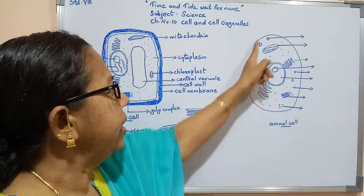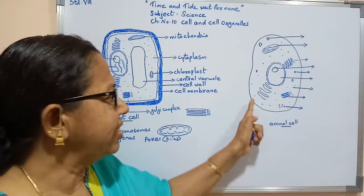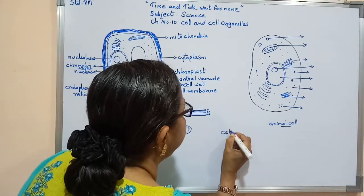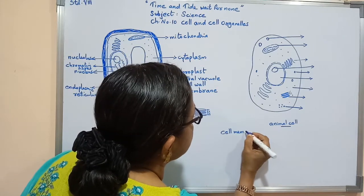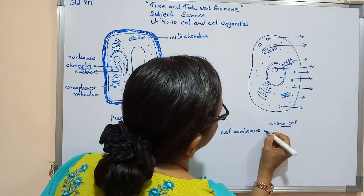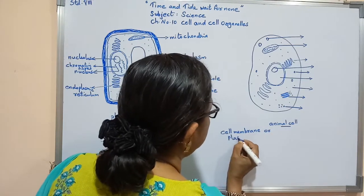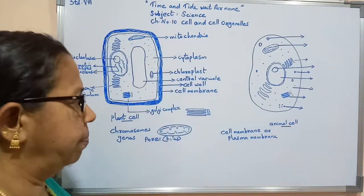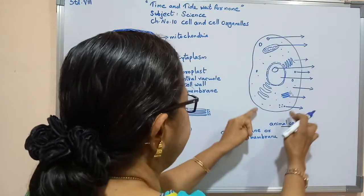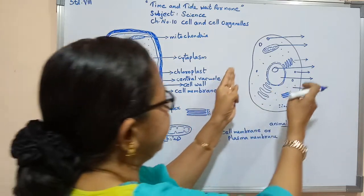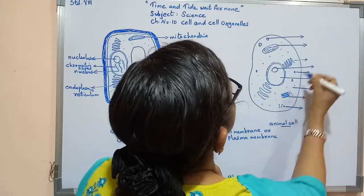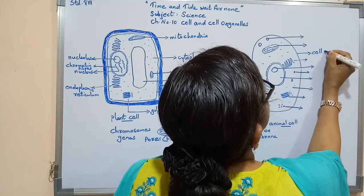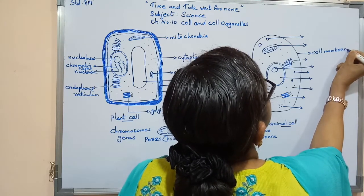The animal cell has only a cell membrane. The cell membrane has one more name — it is also called the plasma membrane. So the cell membrane and plasma membrane refer to the same structure in the animal cell.